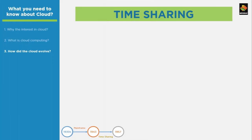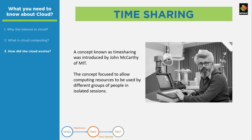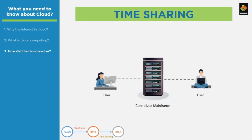In 1957, Professor John McCarthy of MIT introduced a concept called time sharing. It allowed multiple users to share a computing resource in allocated time slots sequentially. This worked well in an era where computing speed was faster than user interaction, and time sharing allowed optimum usage of this computing capability by reducing the waiting times inherent in every user session.